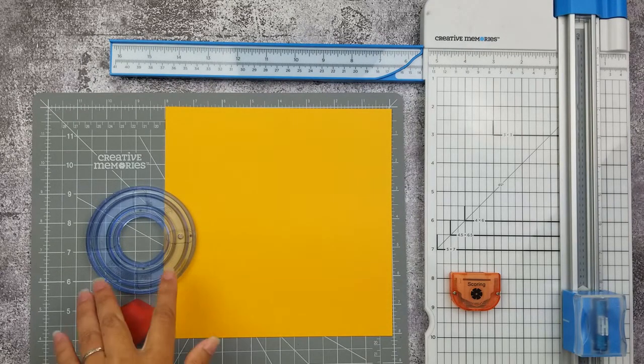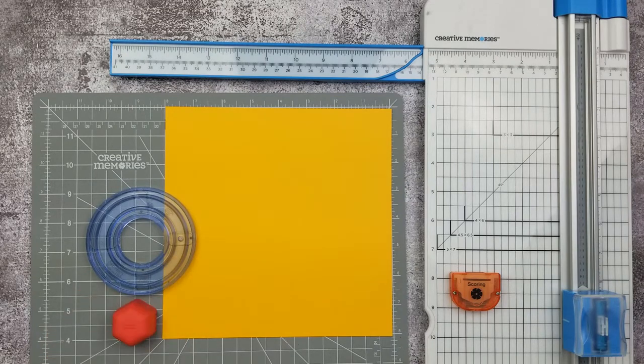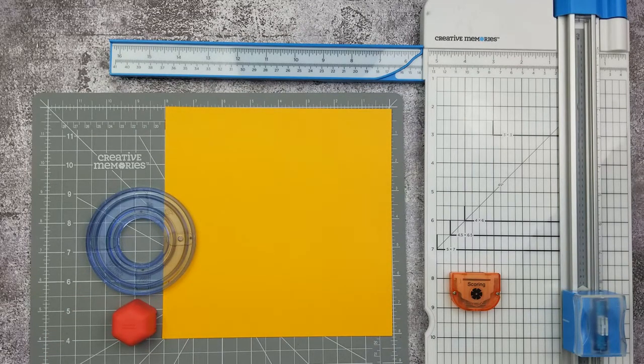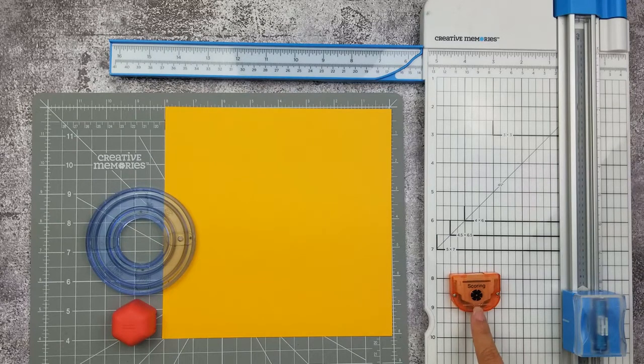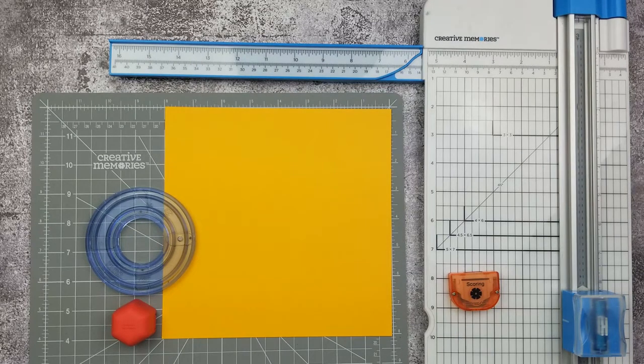You're gonna need the smallest circle pattern for the custom cutting system, so that's the four inch circle, the red blade, an 8x8 sheet of cardstock, your trimmer with the scoring blade, you'll need decorative paper, and possibly a set of scissors.